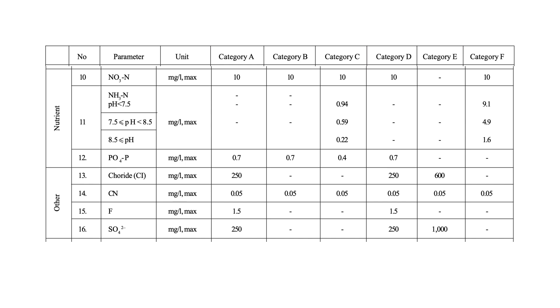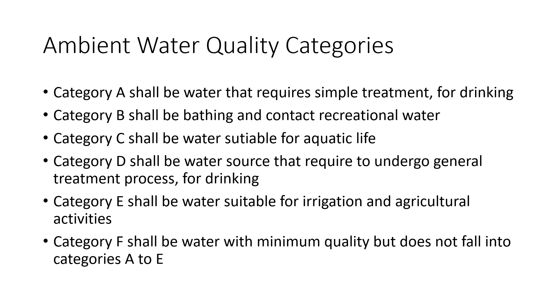Nutrient values are particularly critical for aquatic life, so under category C almost all nutrient parameters are listed. For other categories such as A, B, D, and E, only the nitrate value is specified, as it is the most crucial value. Excess nutrients in water bodies can lead to eutrophication and other issues that can eventually harm aquatic life.